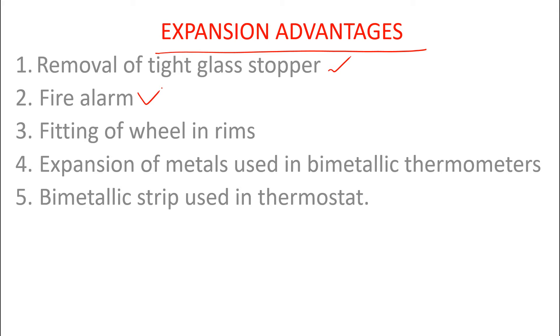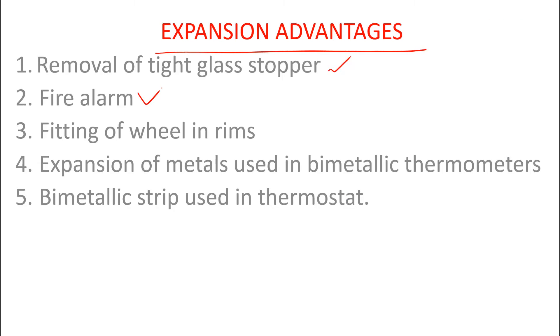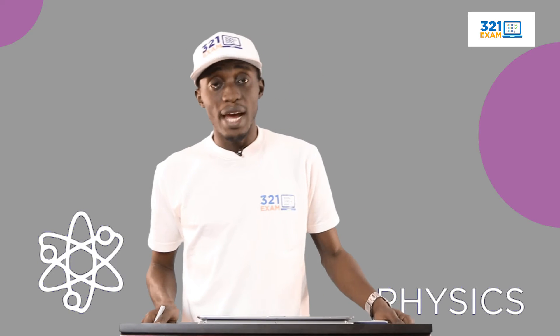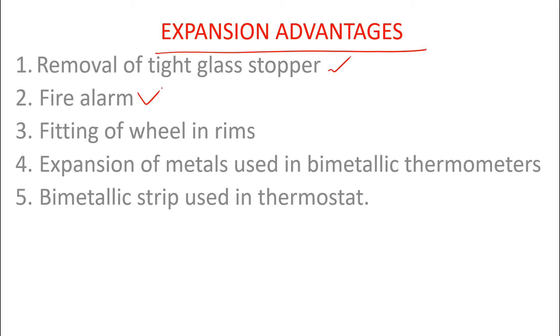Fire alarm — most of us have this item at home such that whenever there is heat, it triggers off the alarm and it rings, indicating there is fire in the house. This is also an advantage. Fitting on the wheel in rings is another advantage of expansion. Then expansion of metal using a bimetallic strip thermometer — it is made up of brass and iron riveted together, and whenever it's heated, it curves with the brass outside and the iron inside. These are used in the production of thermostats, which is used in the electric pressing iron.